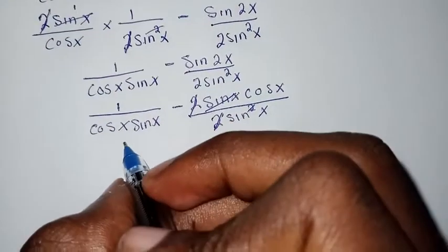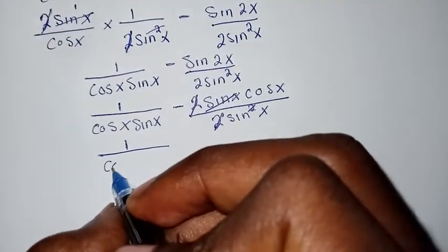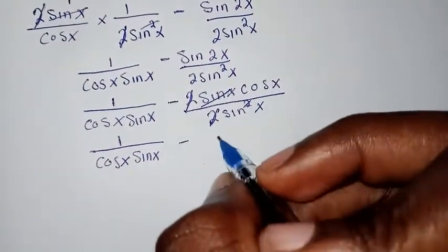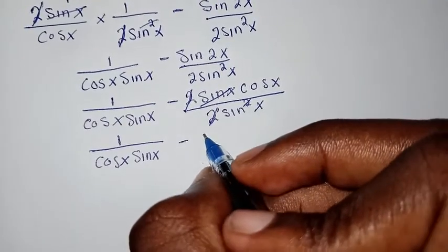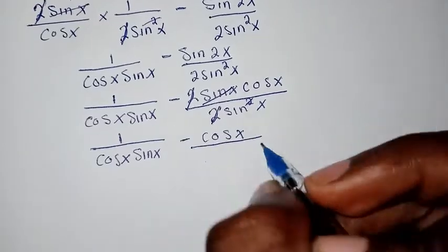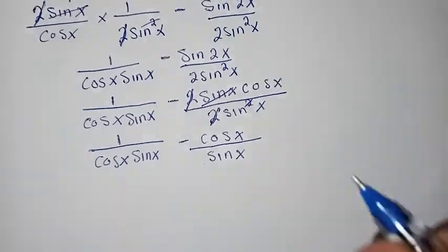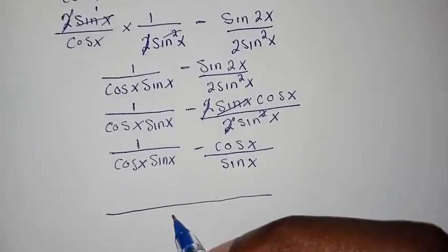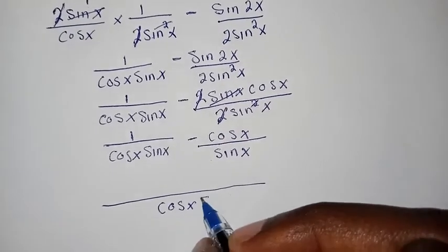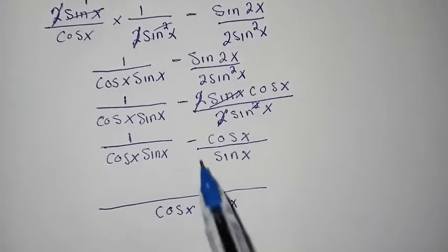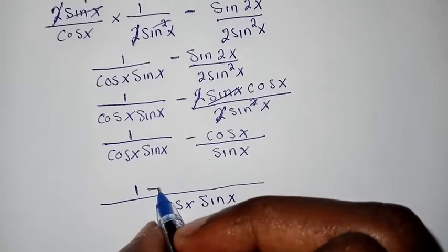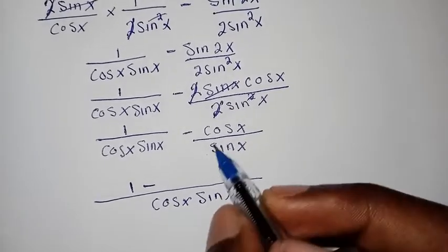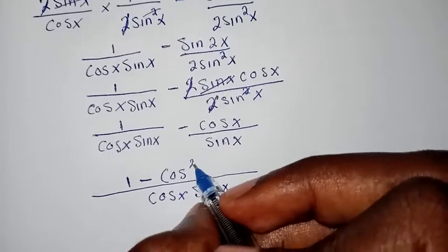So now it's getting easier. We have one over cosine x sine x, minus cosine x over sine x. The common denominator is cosine x sine x. This gives us one minus — and when we multiply cosine x over sine x by cosine x, we get cosine squared x — so the numerator becomes one minus cosine squared x, all over cosine x sine x.